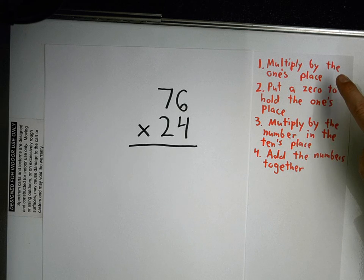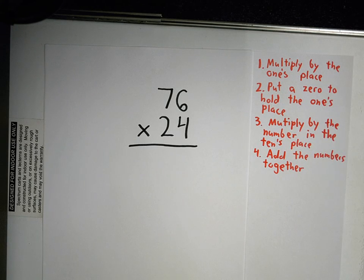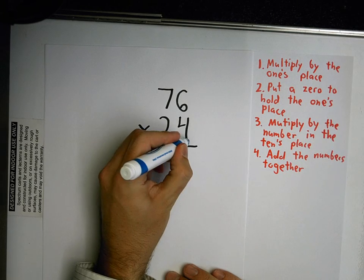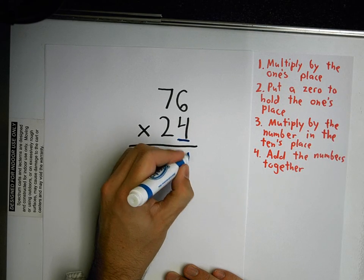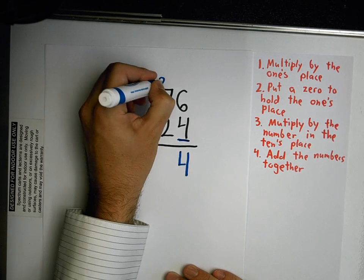First step is multiply by the ones place. And I'm going to do that right here. My ones place is right here. 4 times 6 is 24. Put my 4 down here and my 2 up here.